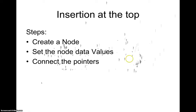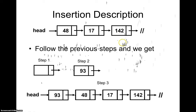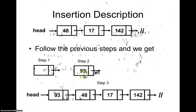For insertion at the top, the steps are: first, create a node with a data part and a pointer part; second, set the node's data value; third, connect the pointers. In an existing linked list with a head and a tail pointing to null, the newly created node's pointer is set to point to the current head. The node with value 93, for example, is made to point to node 48, giving us the updated linked list.